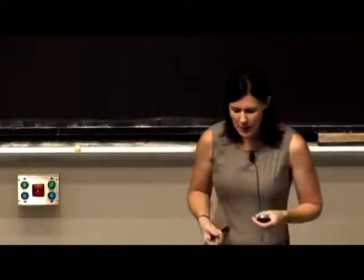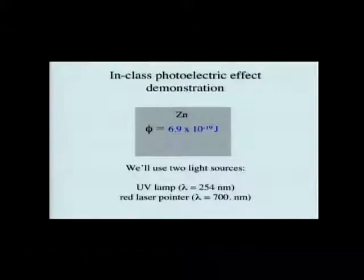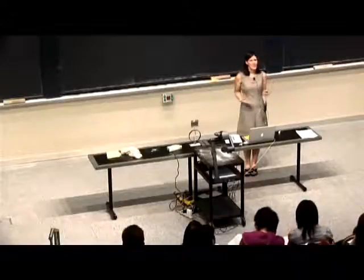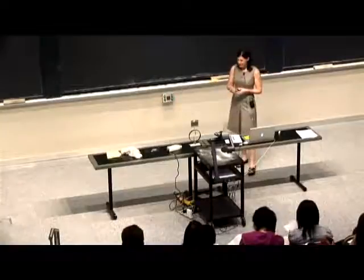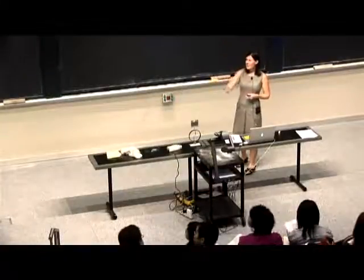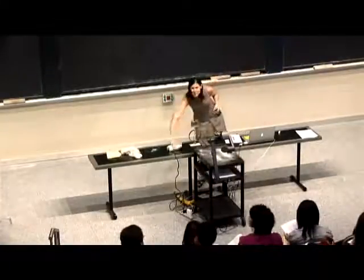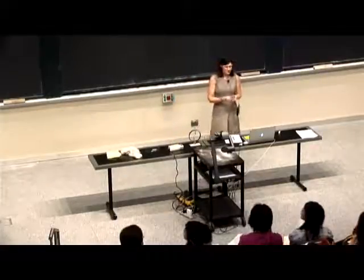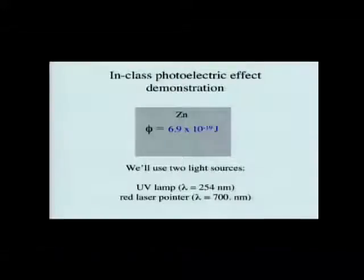All right, so let's do an in-class problem. This will be done with zinc. We have a zinc plate up here, and in a minute I'll describe how we can probe if electrons are coming off of it. We're going to irradiate it with two different light sources. We have a UV lamp right here, which is centered at a wavelength of 254 nanometers. And then, since we have my red laser pointer, we will also try it with the red laser pointer, which is centered at a wavelength of 700 nanometers.